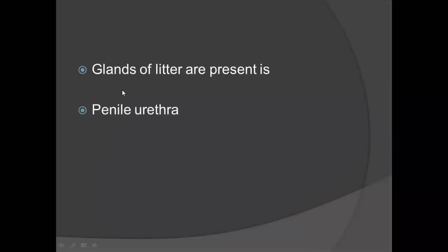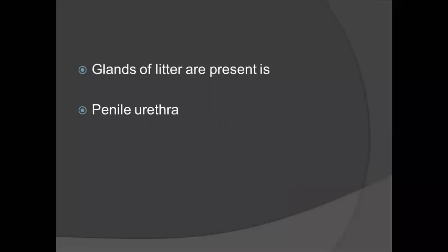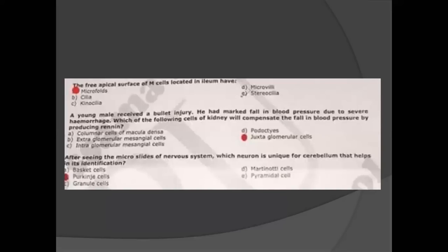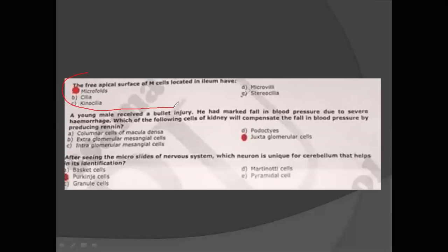Glands of Littre are present in the penile urethra — this is an important MCQ. Also, the pre-epithelial surface of M cells located in the ileum have microfolds. I am showing you these MCQs so that you get an idea of what kind of questions appear in the paper.